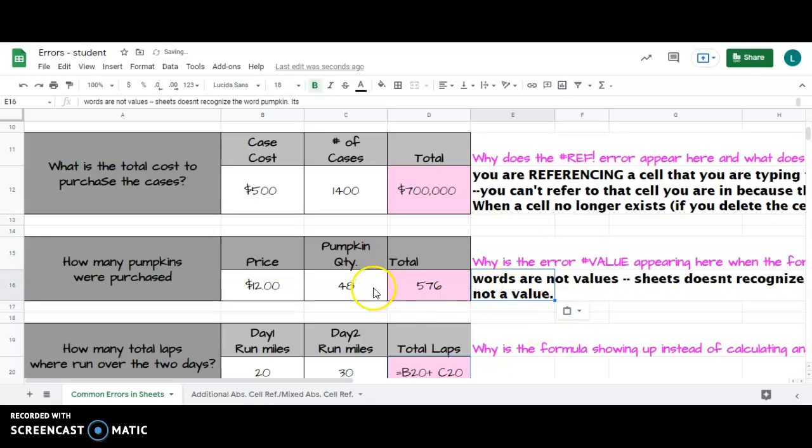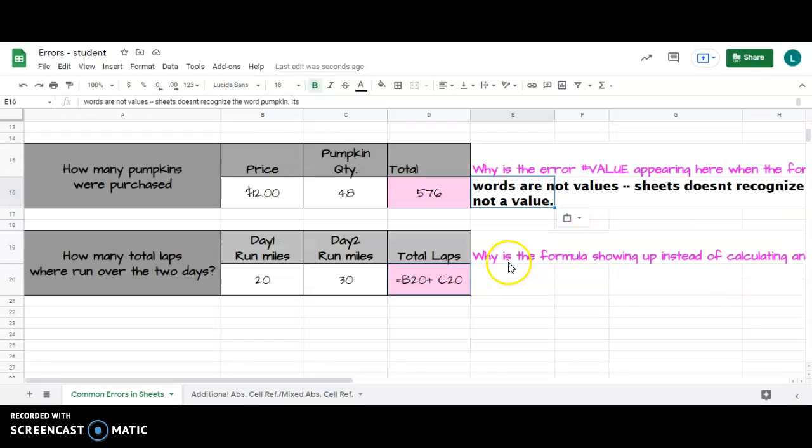So why is the error VALUE appearing? Words aren't values, so Sheets doesn't recognize the text in the cell that it's referencing because it's not a numerical value.